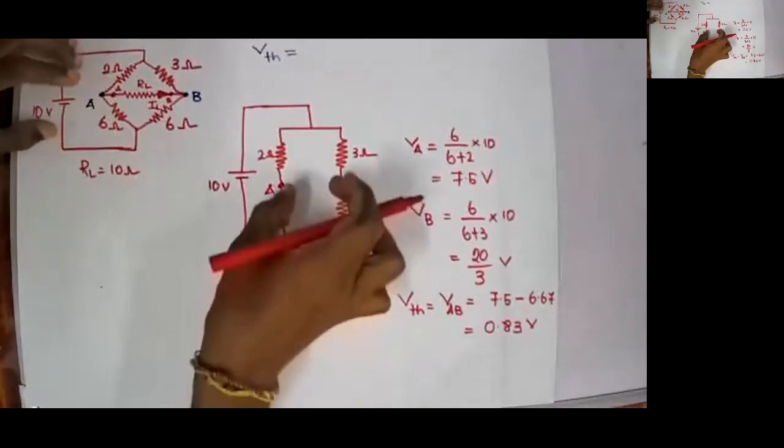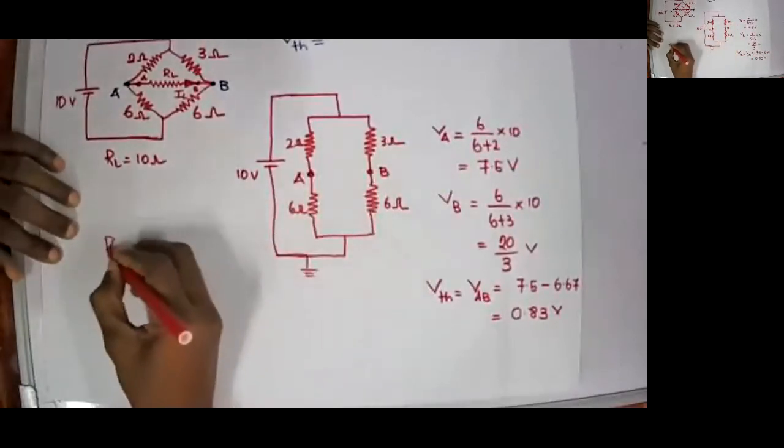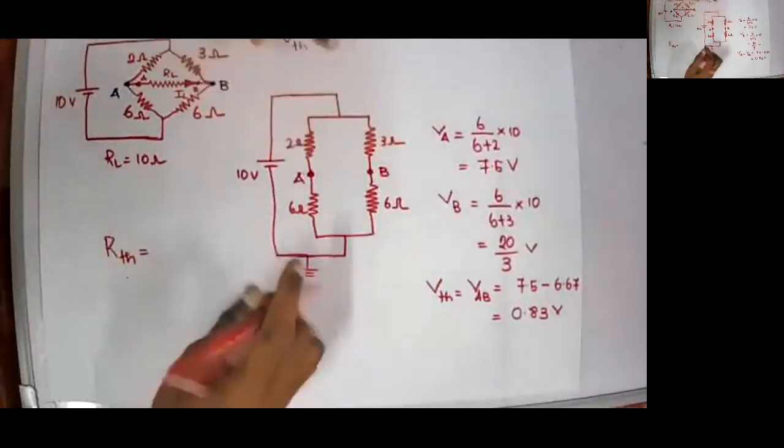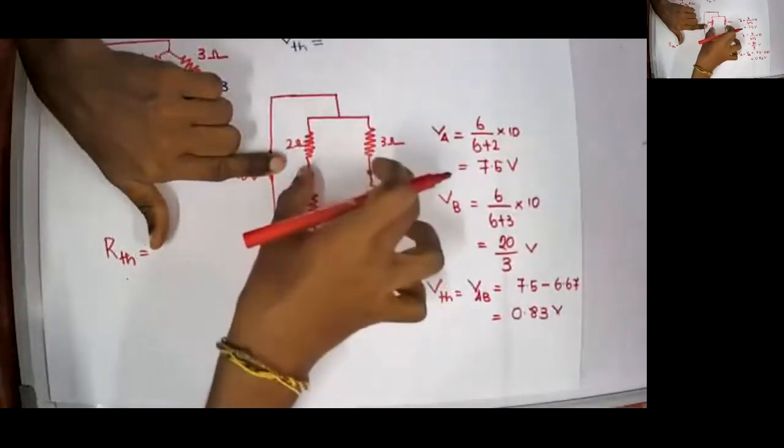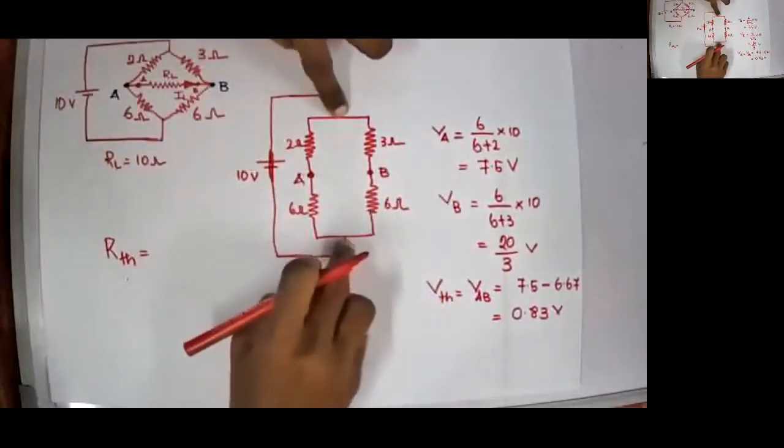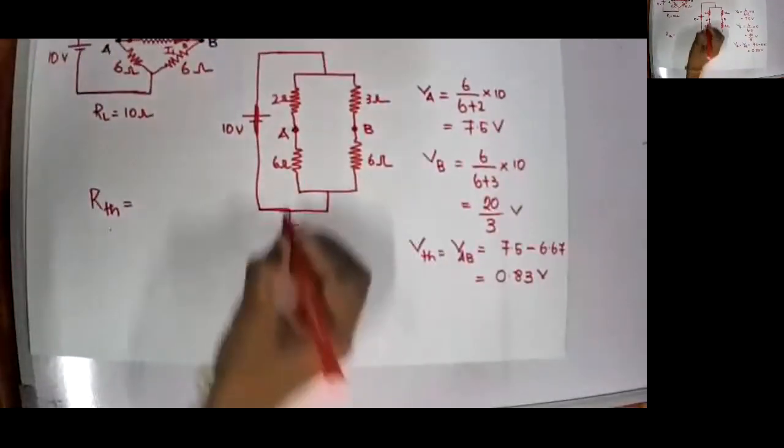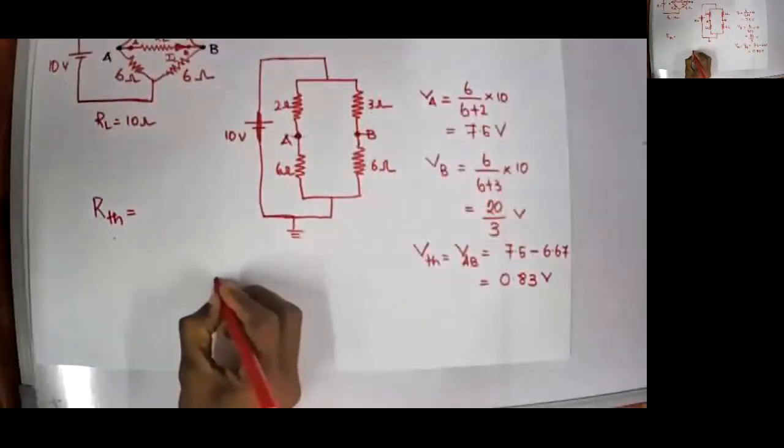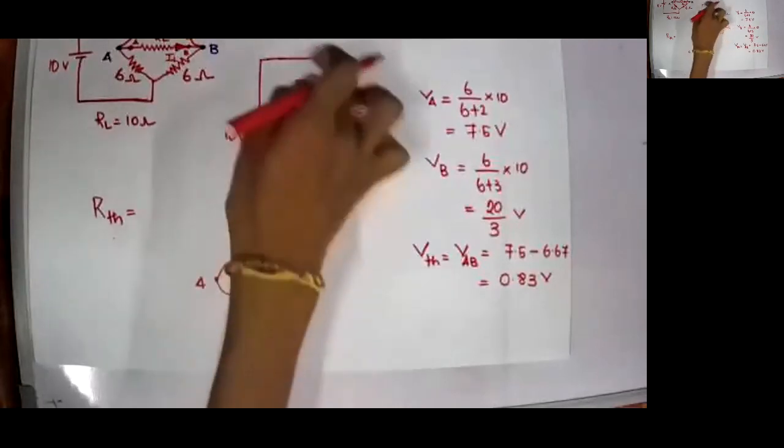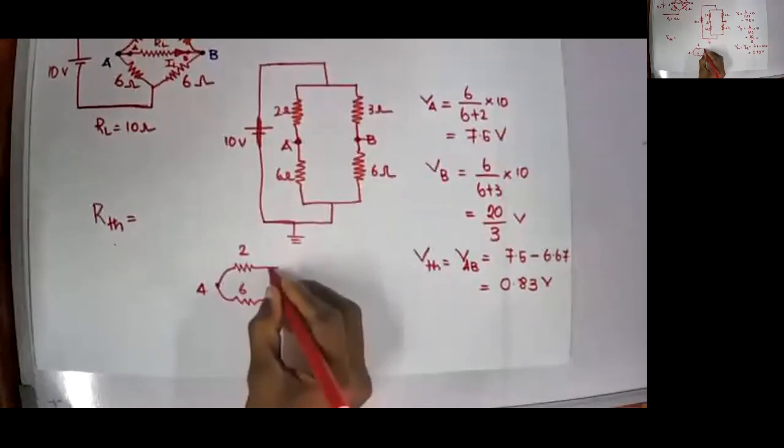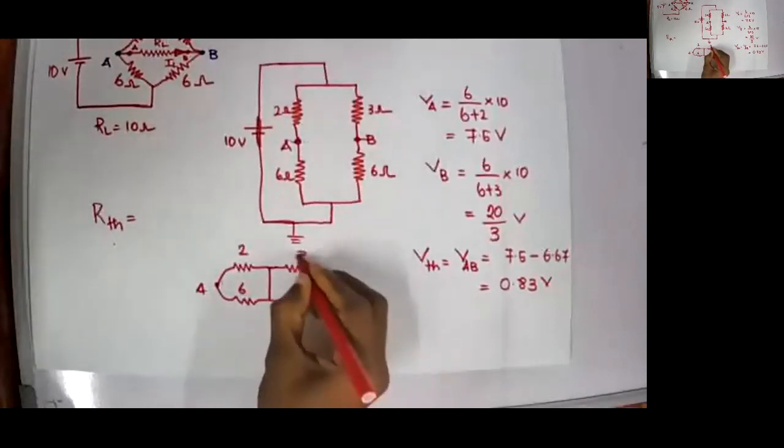Now we'll find out the equivalent resistance RTH. Thevenin's equivalent resistance RTH across A and B. Now RTH equals: you have to do is, you need to short circuit the source. So it will be short circuited and then the total resistance is across A and B. Since it is short circuited I can assume that these two are connected in the middle and I can pull A and B apart. So I can redraw the circuit. So from A and B I can simply pull it apart. So I have my A here. So 2 ohm and then 6 here, 2, 6 and then that is short circuited. Then I have 3, 6. So this will be my B.